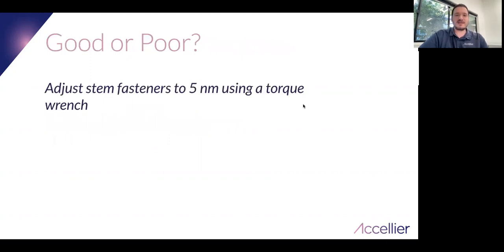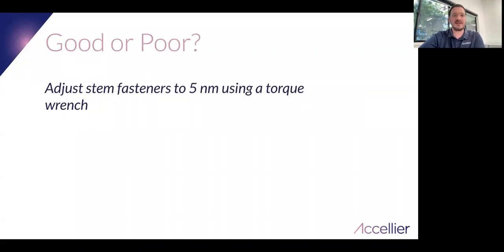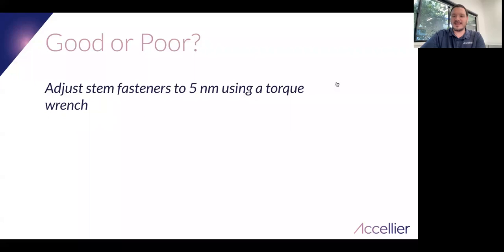Let me give you four examples and you tell me whether they're good or poor. First: 'Adjust stem fasteners to five nanometers using a torque wrench.' Most people think that's a pretty good example. It's precise, referring specifically to what needs to be adjusted, it gives a measurable benchmark of five nanometers, and it describes the tool that needs to be used. One point raised: maybe a time frame should be added. Good point.